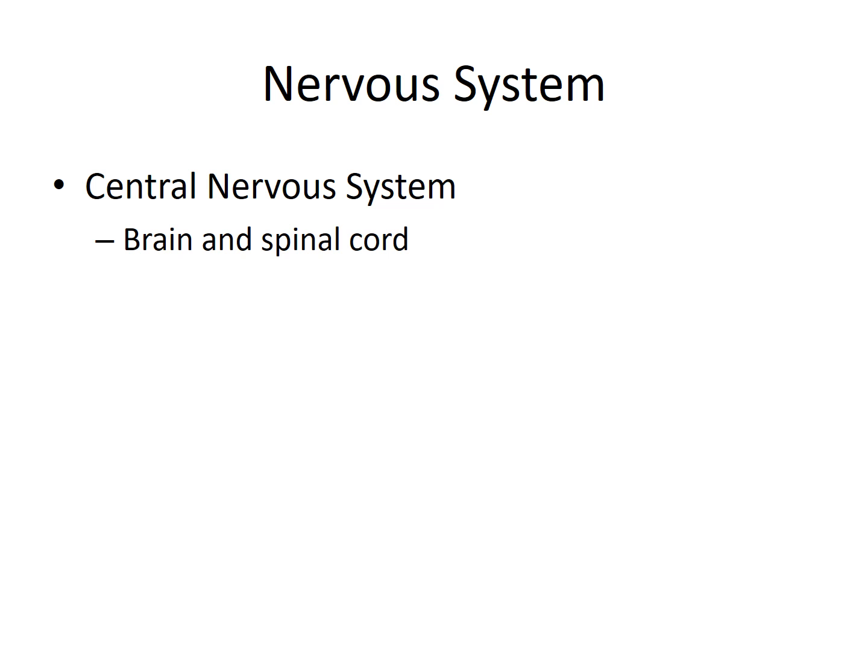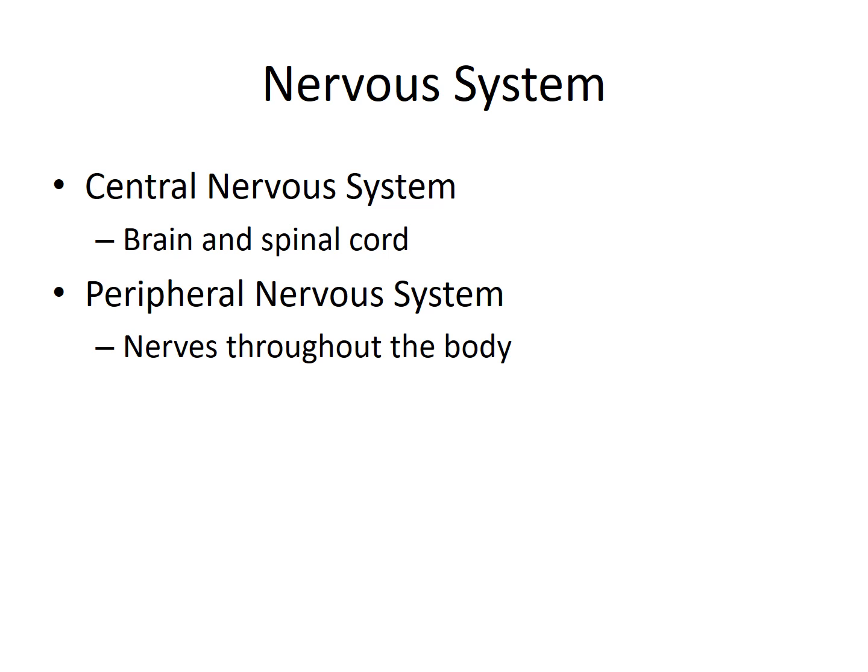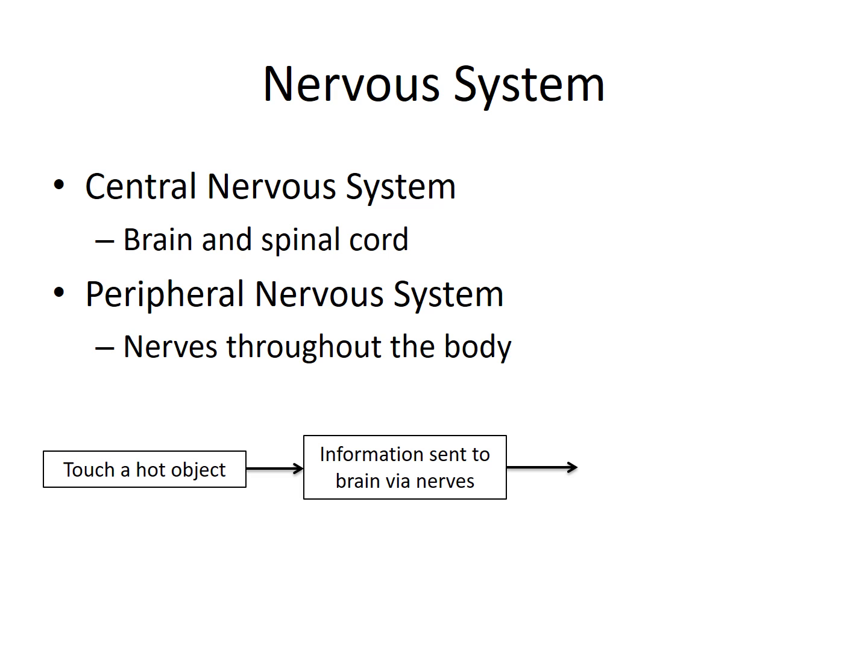The nervous system is composed of the CNS, or central nervous system, which includes the brain and the spinal cord. We also have the peripheral nervous system, or PNS, which is all the nerves throughout the body. How these two systems interact is shown in this flowchart here. If we touch a hot object, nerves in our hand pick up that information and send action potentials, or electrical signals, to the brain through these nerves.